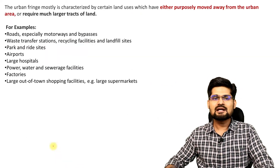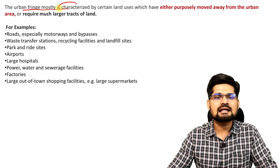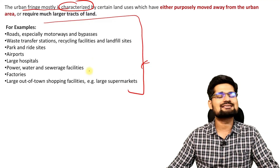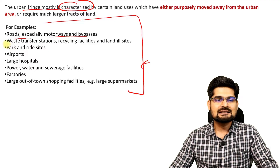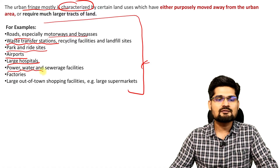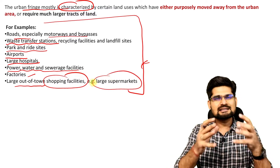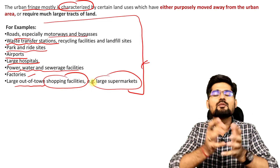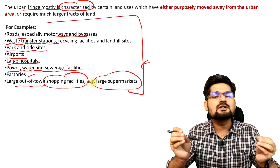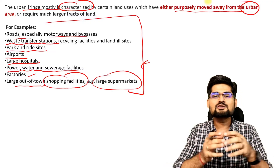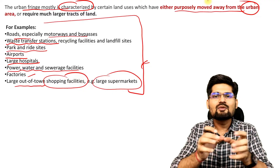The urban fringe is mostly characterized by certain unique things: roads — especially motorways and bypasses — waste transfer stations, park and ride sites, airports, large hospitals, power and water and sewage facilities, factories, large out-of-town shopping facilities, and large supermarkets. Basically, when a town gets congested, features or service providers who require more land shift to the outskirts, to the sub-urban area — they purposefully move away from the core urban area. That's where the land use change comes into the picture around the main city area.